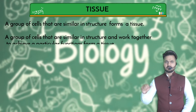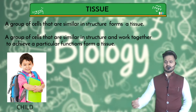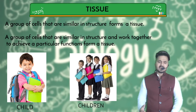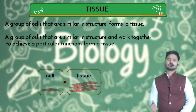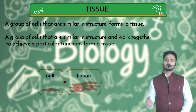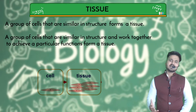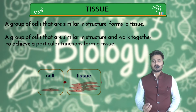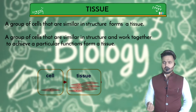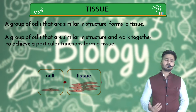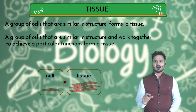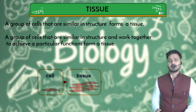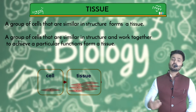If there is a single student in a class, we call that a child. But when a group of students is together, we call them children. Similarly, a single unit is called a cell, but when all cells are connected together, we call it a tissue. So the definition is: a group of cells that are similar in structure and work together to achieve a particular function is called a tissue.